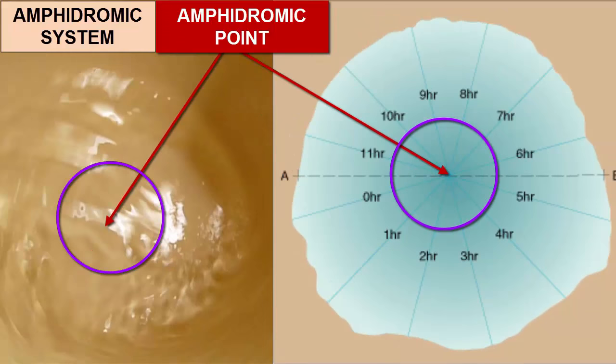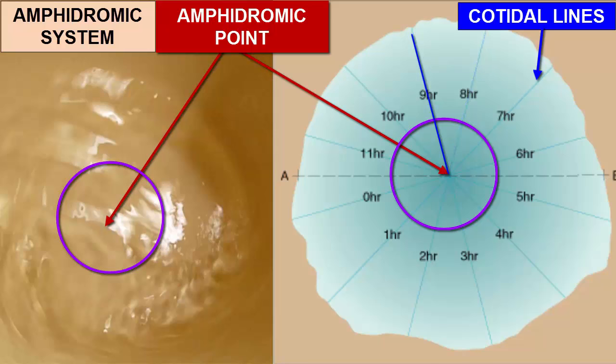In this bird's eye map view, we can further describe the amphidromic system with lines and circles. These lines that look like spokes of a wheel represent the location of the high tide every hour as it moves around the bucket. We call these lines cotidal lines because every location along the line experiences high tide or low tide at the same time.